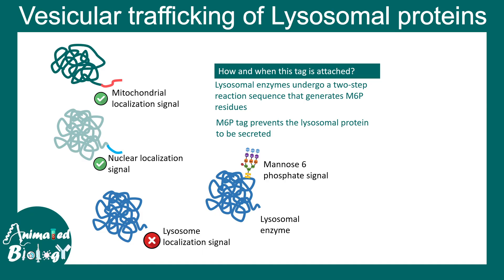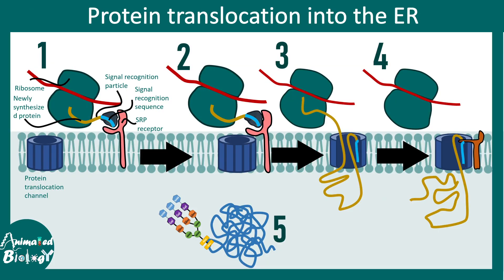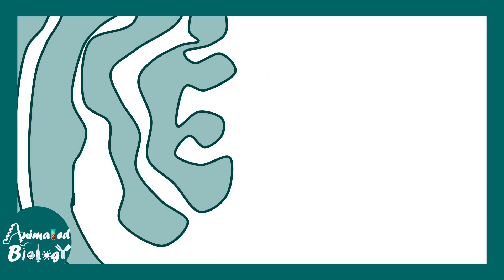The first part of the process is similar to any protein translocation: the protein is synthesized on the ribosome, translocated into the ER, and N-linked glycosylation occurs. We have previously described these processes in detail, so we will begin our discussion at the trans-Golgi network.